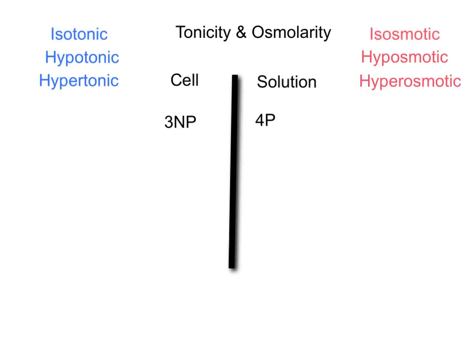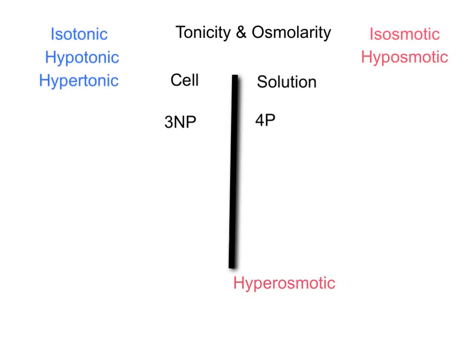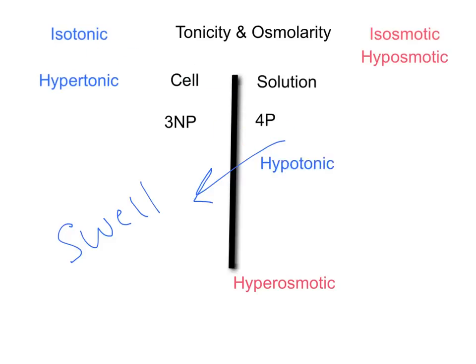In the fifth situation, the osmolarities are not the same — the solution has four particles (perhaps 400 milliosmoles), all penetrating, and the cell has three non-penetrating. Because the solution has a higher number of particles, it is hyperosmotic, with the cell being hypoosmotic. Looking at water movement, water moves towards the higher concentration of non-penetrating, so water moves into the cell. The cell swells, making the solution hypotonic. We now have a hyperosmotic solution which is hypotonic.